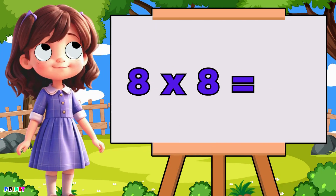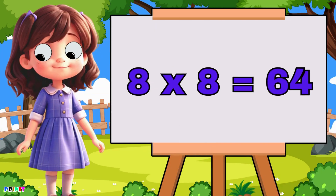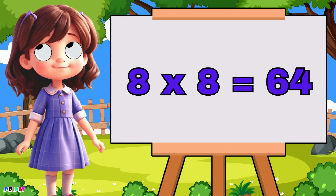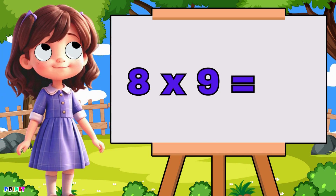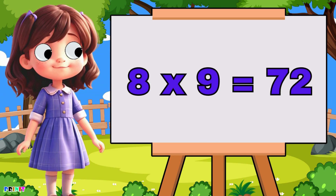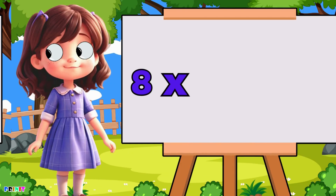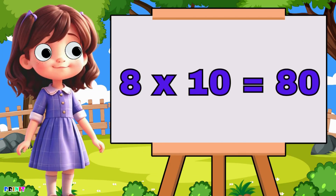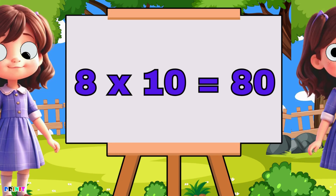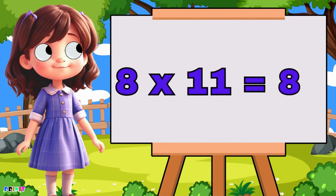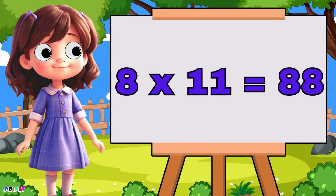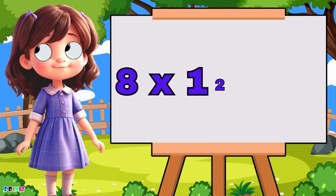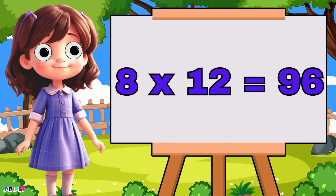Eight eight's are sixty-four, eight nine's are seventy-two, eight ten's are eighty, eight eleven's are eighty-eight, eight twelve's are ninety-six.